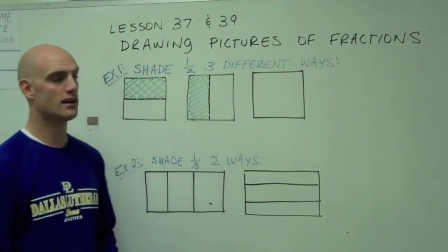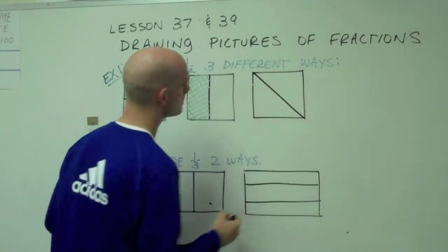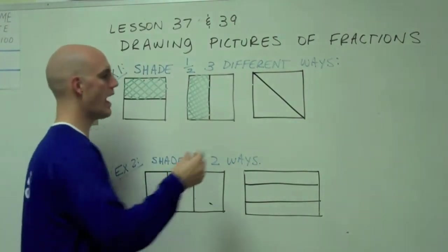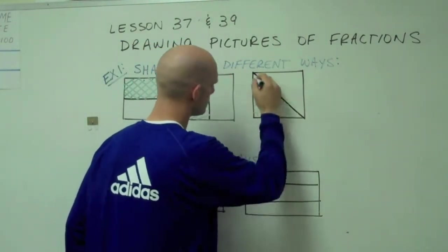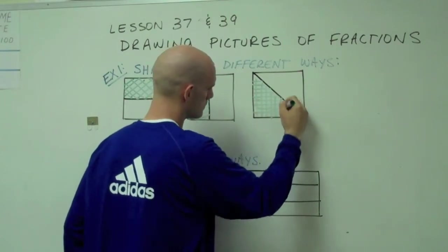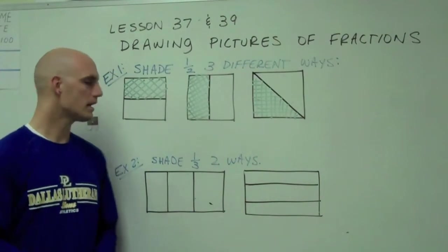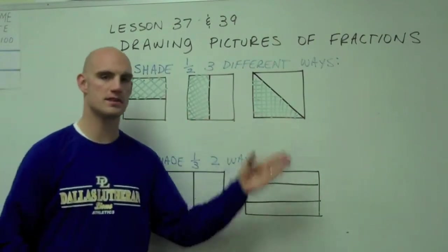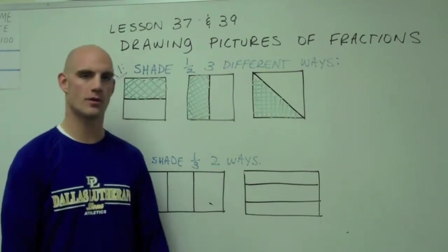The third way I could divide it would be to divide it diagonally into two triangles. And if I shade one half again, half of the square is shaded. Because all three of these squares are roughly the same size, if I shade one half in any of these three ways, I've shaded one half of this square.